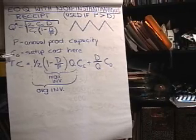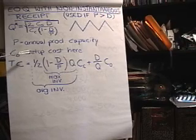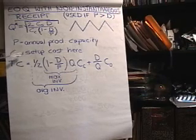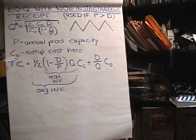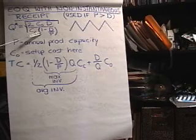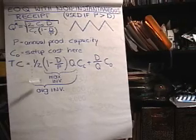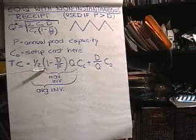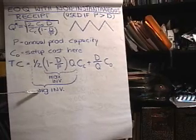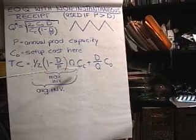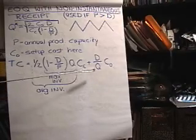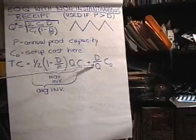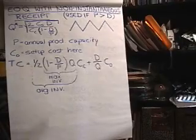Here C sub O is now the setup cost instead of the order cost. That's how much it costs to change over your line from one product to the other. So the formula is a little different from the regular EOQ because we've got this part in here. Total cost, now we have the maximum inventory is right here. And then we multiply that by one half, we get the average inventory. And then taken all together, that's the holding cost. And then this D over Q is the number of setups times the setup cost.